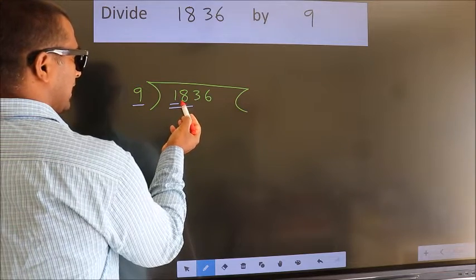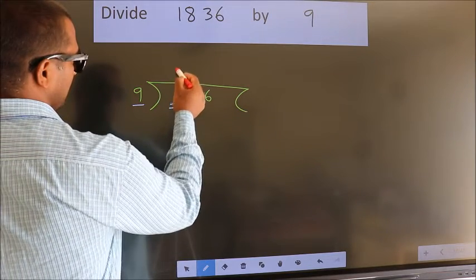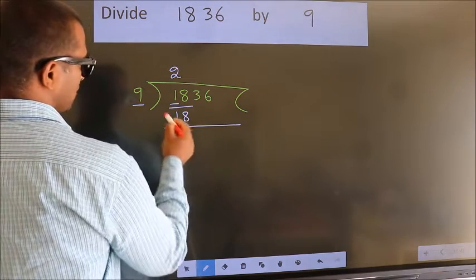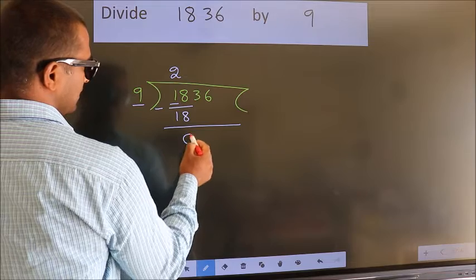When do we get 18? In 9 table. 9 twos 18. Now we should subtract. We get 0.